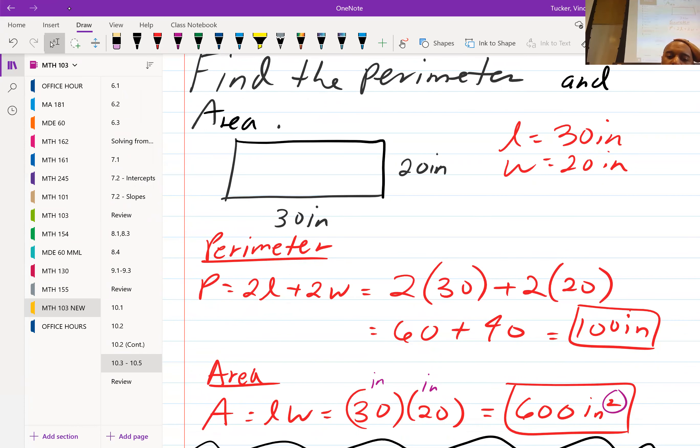And then with our area, length times width, 30 times 20 is 600. And don't forget, your measurement will be squared, inches times inches, inches squared, so 600 inches squared. All right, questions on that.